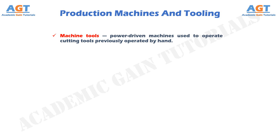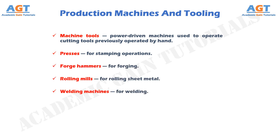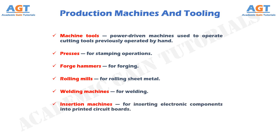Other production machines include presses for stamping operations, forge hammers for forging, rolling mills for rolling sheet metal, welding machines for welding, and insertion machines for inserting electronic components into printed circuit boards. The name of the equipment usually follows from the name of the process.